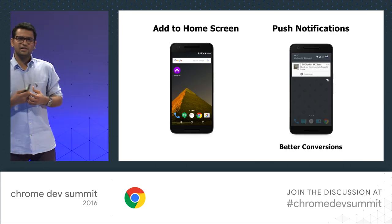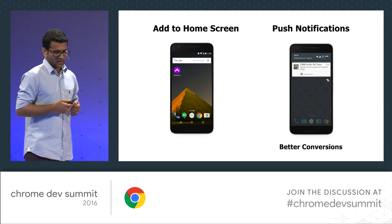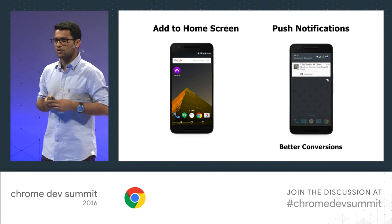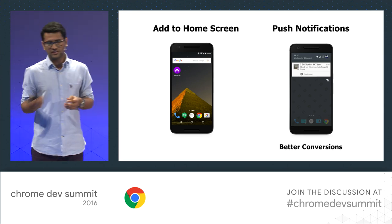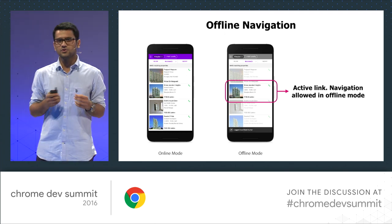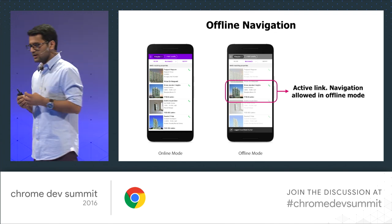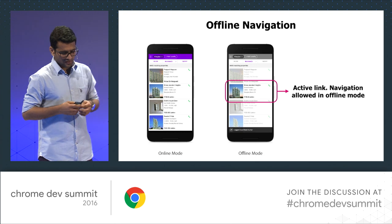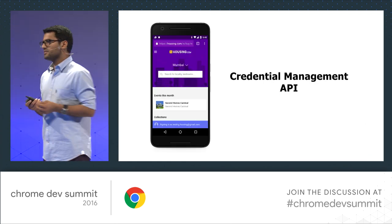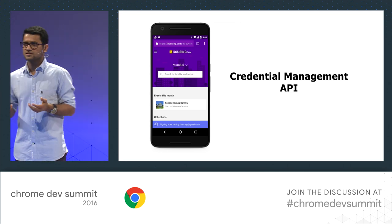We also implemented add-to-home-screen features so users can instantly interact with our app directly from their home screens, and we implemented push notifications. The conversion rates from push notifications are almost beating a few of our other channels — that's one thing taking us closer to our native apps. We also enabled offline navigation, important because property sites are often at the outskirts of cities with very flaky or no network. We used the Credentials Management API to keep users virtually always logged in, with information synced across devices smoothly.